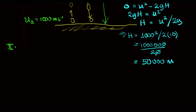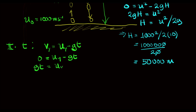To find the time taken to reach the maximum height, small t, we use the first equation of motion connecting V, U, G and T for upward motion: V = U − GT. At maximum height V = 0, so 0 = UY − GT, giving GT = UY. Our UY is 1000 meters per second and G is 10, so T = UY/G = 1000/10 = 100 seconds. That's the time the anti-aircraft shell takes to reach the maximum height.